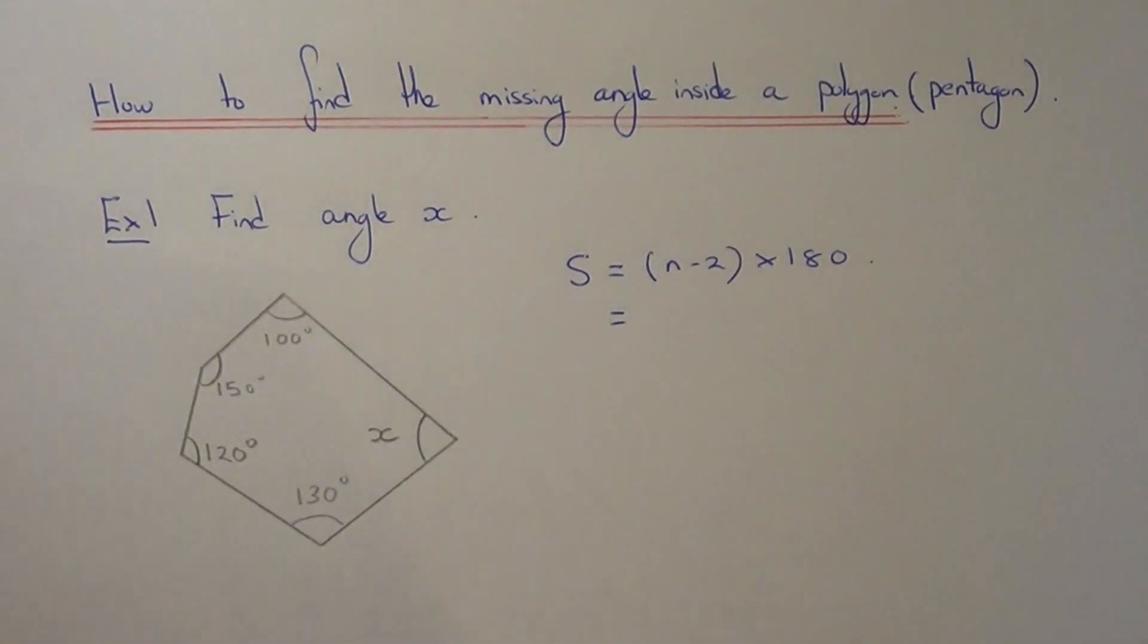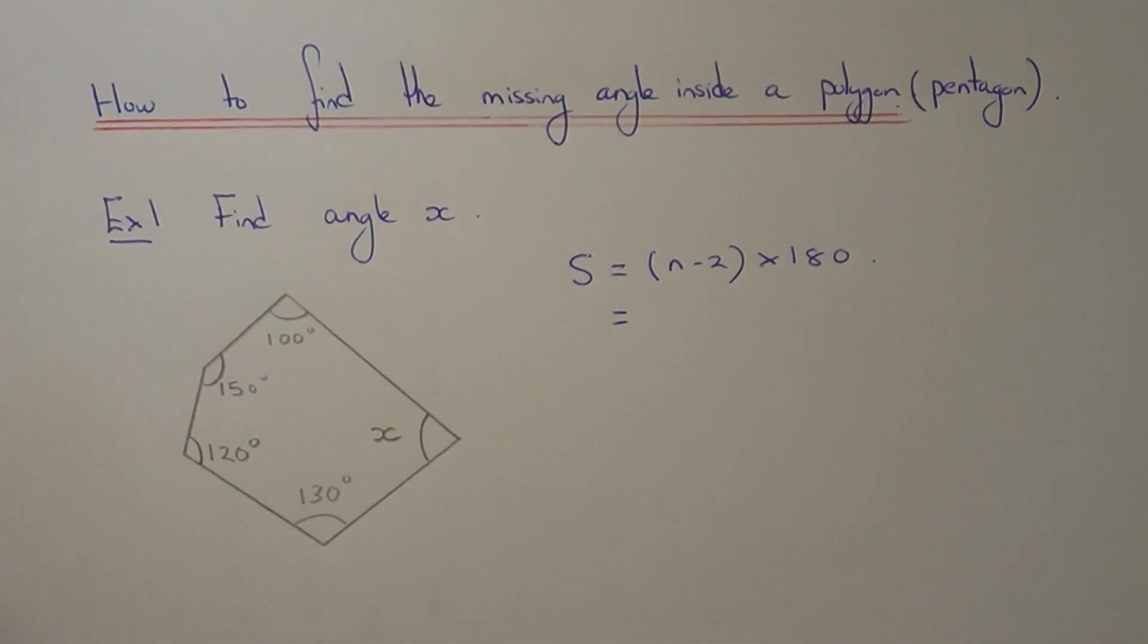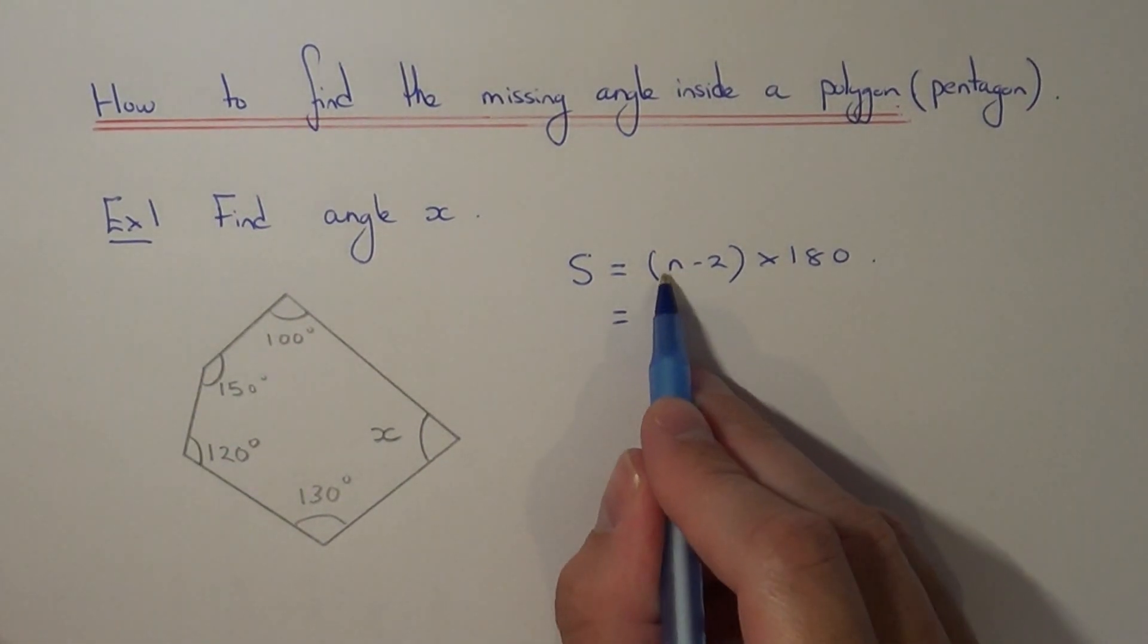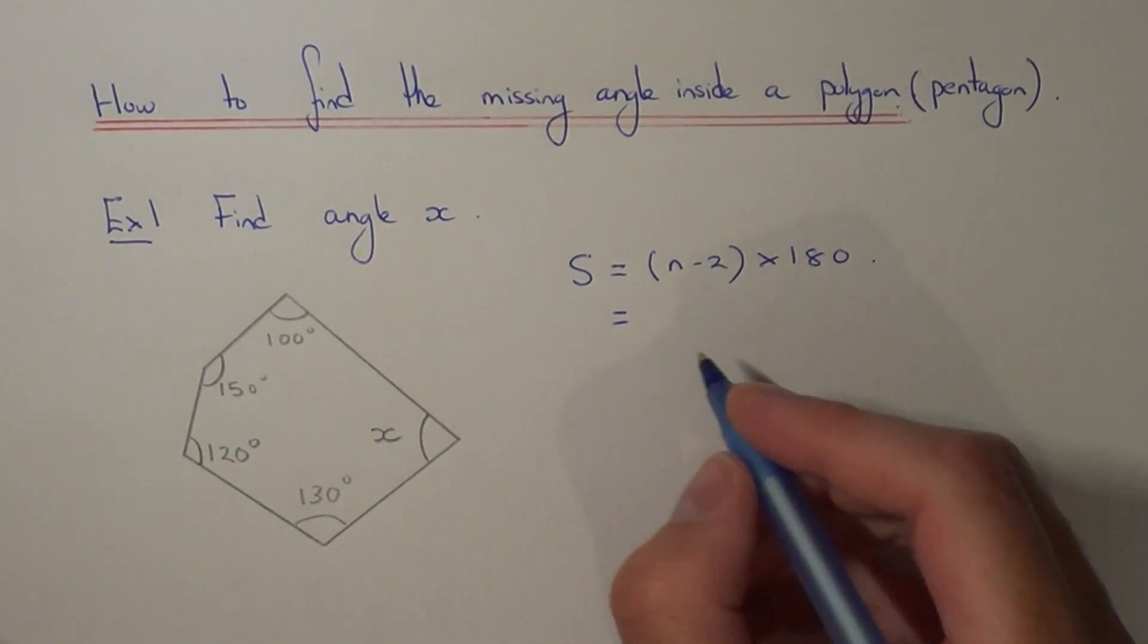So since we have a pentagon, this has five sides, so we just need to substitute five into this formula.